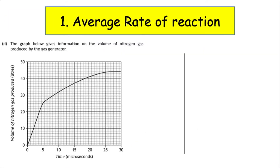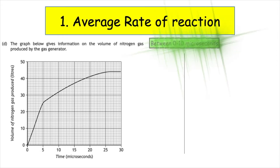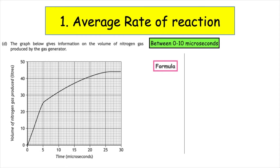Let's do an example of calculating the average rate of reaction using a graph. The graph below gives information on the volume of nitrogen gas produced by the gas generator. Calculate the average rate of reaction between 0 and 10 microseconds. The first thing we're going to do is write out our formula: average rate is equal to change in quantity over change in time.